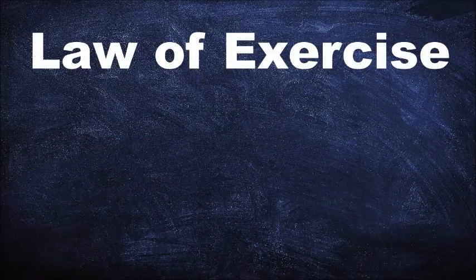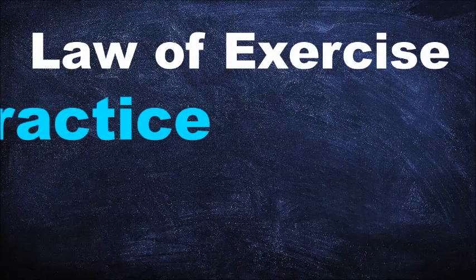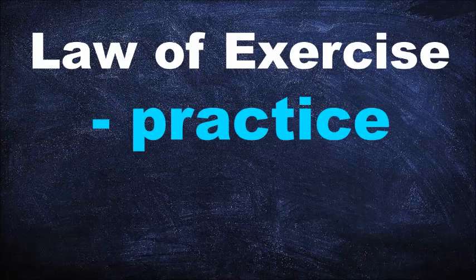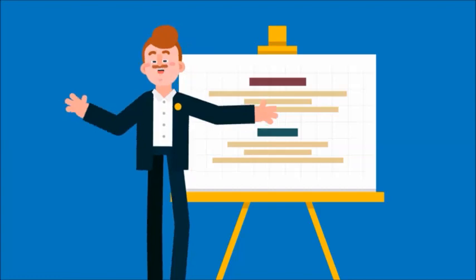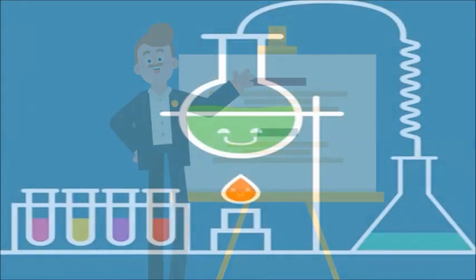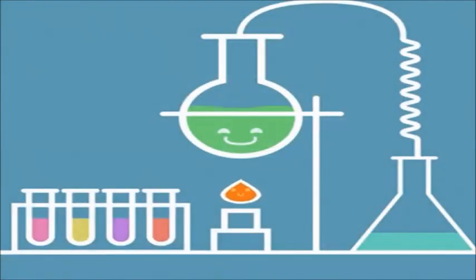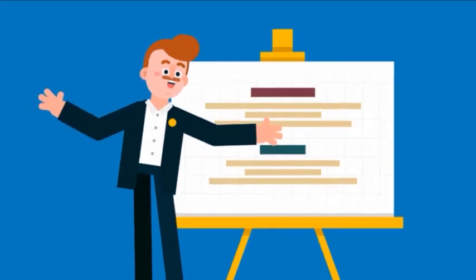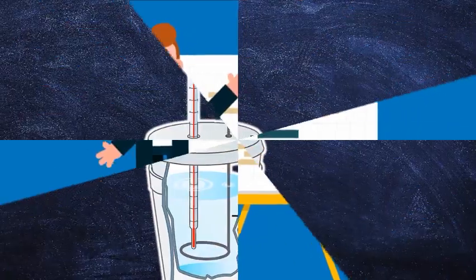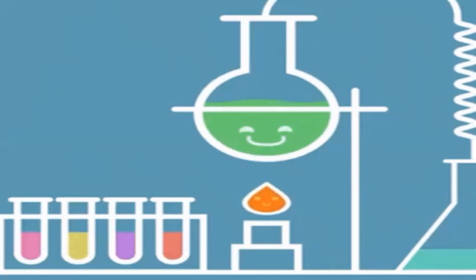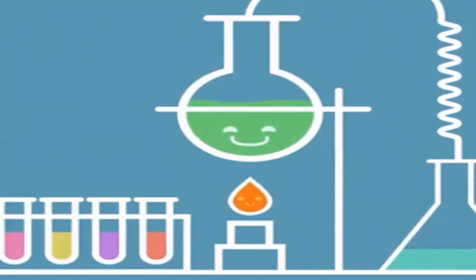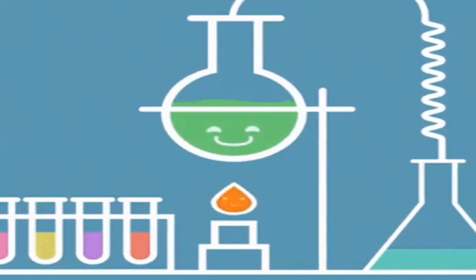The law of exercise is designed for the learner to practice something to retain the knowledge. This law is an application in some university courses where you have a chemistry lecture course and a separate chemistry laboratory course. The concepts that you'll learn in the lecture class will then be applied in your laboratory class. To a more specific example, in the chemistry class, your professor discussed a topic about calorimetry.